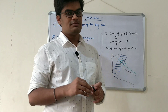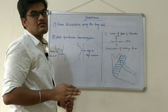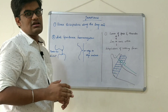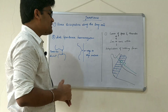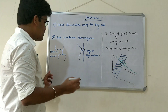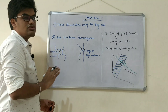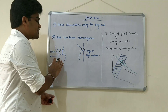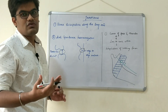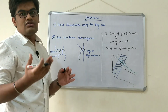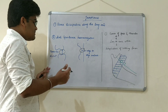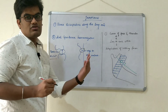Coming on to the importance of the curve of Spee: the first point is force dissipation along the long axis of the tooth, which we have already discussed. The second point is anterior guidance harmonization. The basic criteria of anterior guidance is that whenever we protrude the jaw anteriorly, we get edge-to-edge contact of the upper and lower incisal edges, and at the same time we get posterior disclusion. Achieving posterior disclusion is very necessary, because if the posterior teeth do not lose contact, it gives rise to interferences and shear forces over the posterior teeth. Incorporating the curve of Spee automatically helps in posterior disclusion whenever we protrude the jaw.